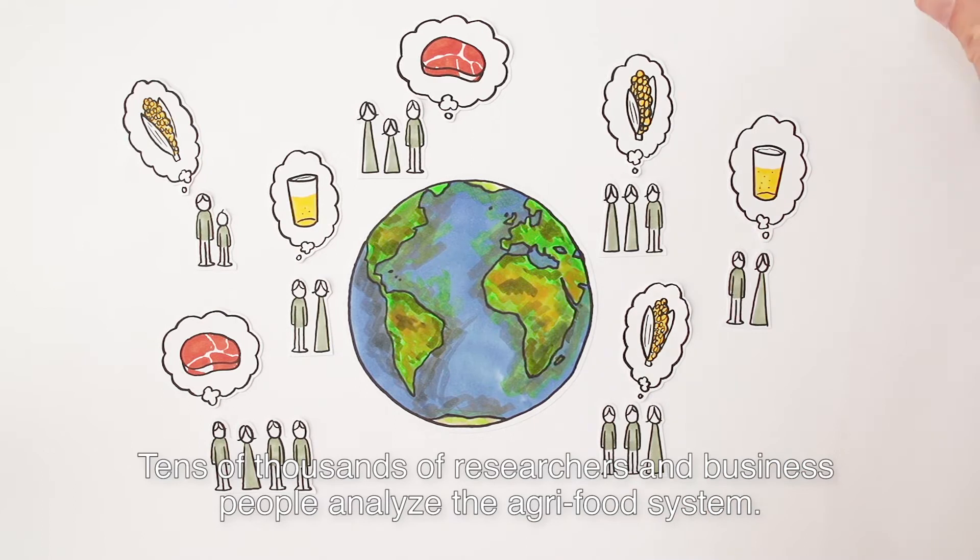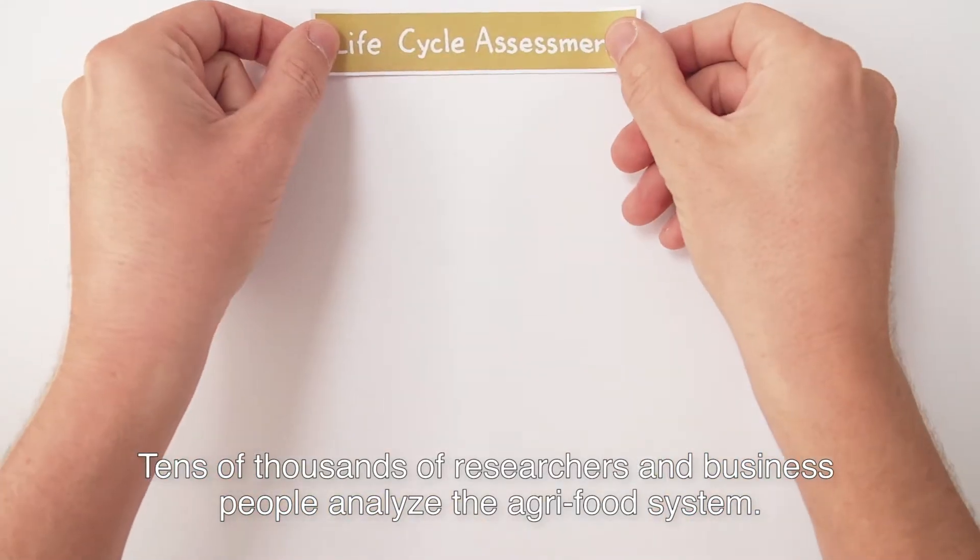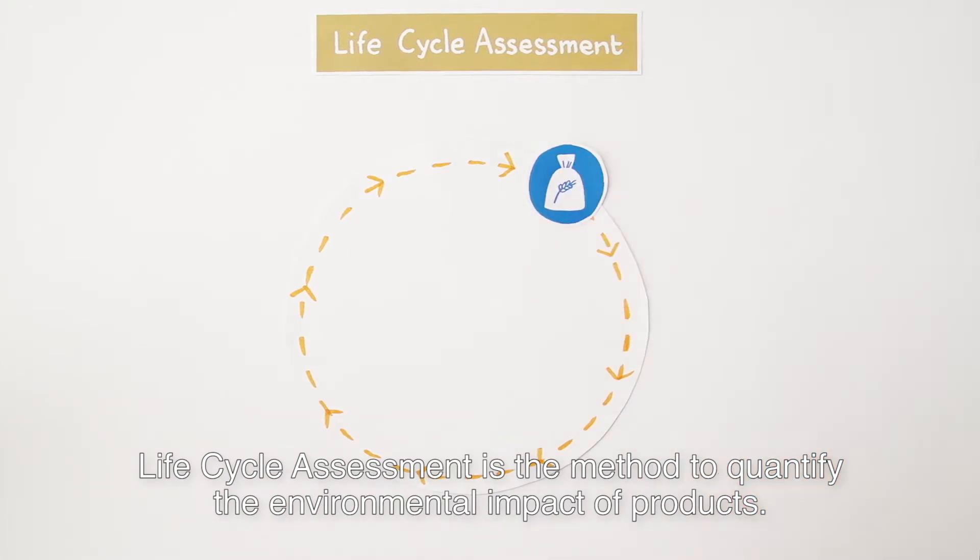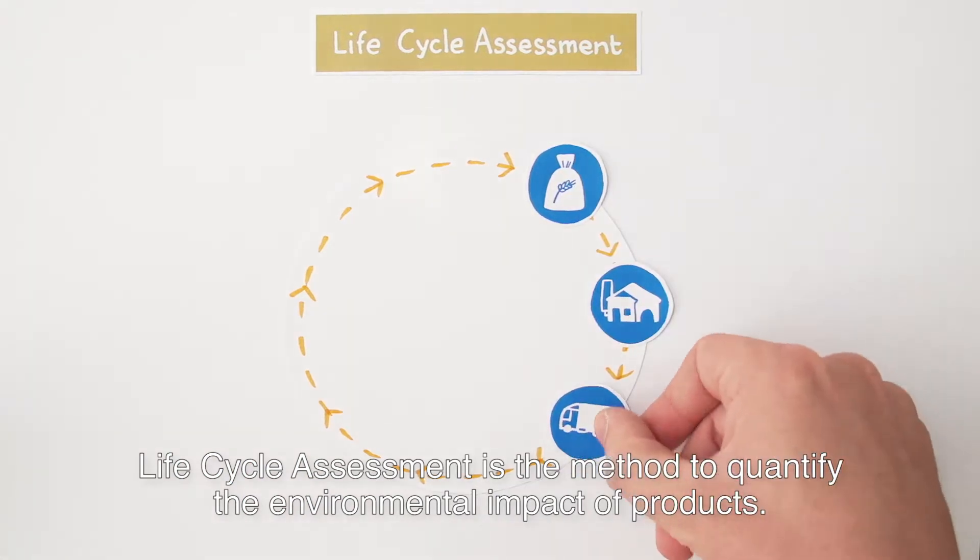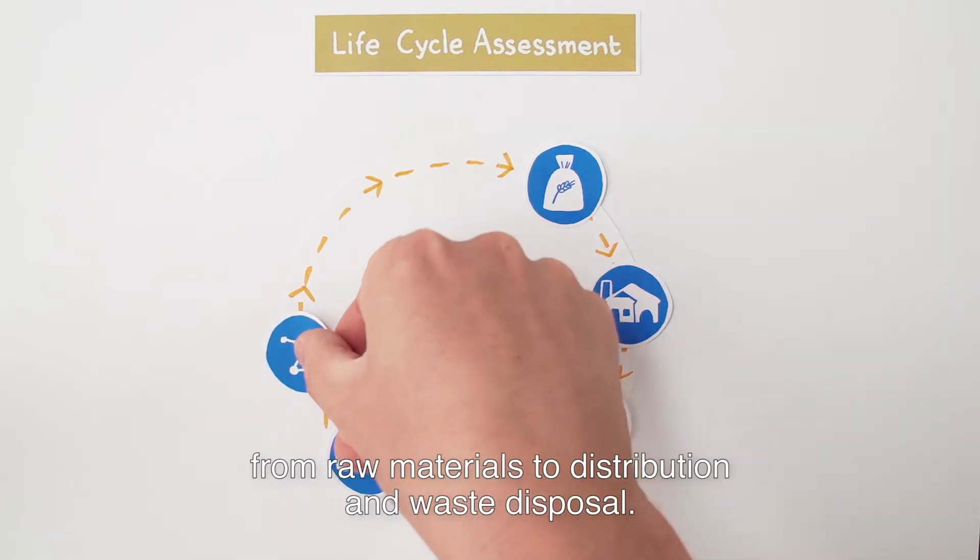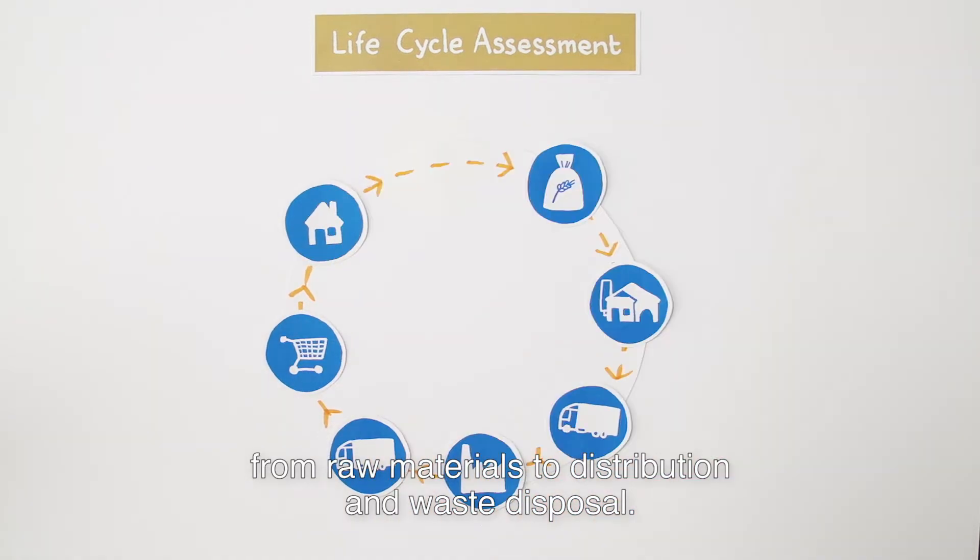Tens of thousands of researchers and business people analyze the agri-food system. Life cycle assessment is the method to quantify the environmental impact of products. It studies the entire life cycle of a specific product from raw materials to distribution and waste disposal.